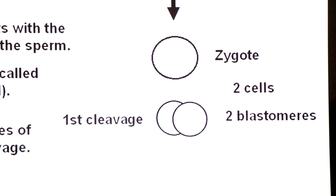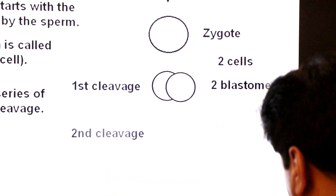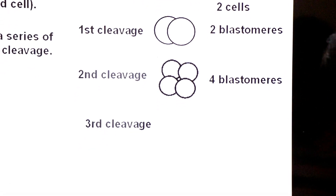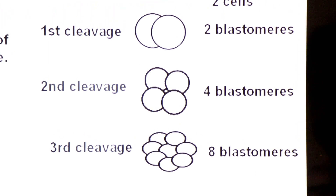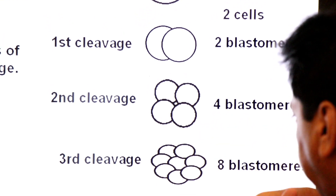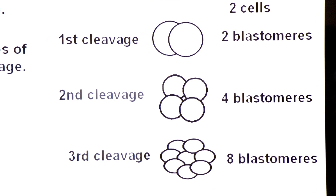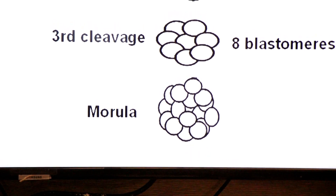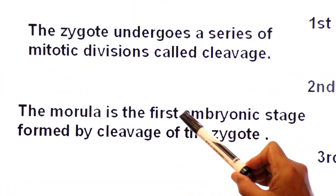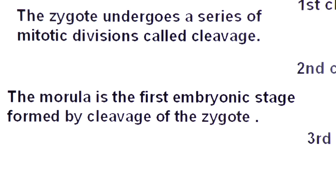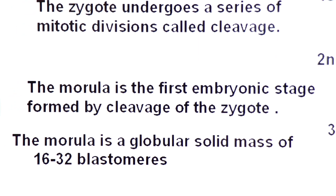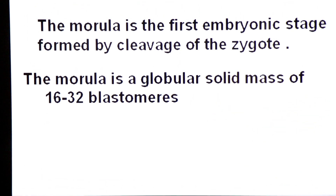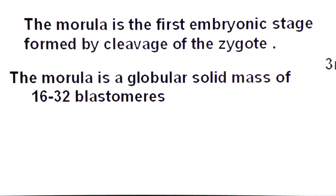This zygote undergoes a series of mitotic cell divisions called cleavage. The first cleavage divides the zygote into two cells. The cells of cleavage are called blastomeres. The first cleavage produces two blastomeres, the second cleavage produces four blastomeres, and the third cleavage produces eight blastomeres. So with each cleavage, the number of blastomeres increases. The first embryonic stage formed is a rounded globular embryo called morula. Morula is a rounded ball-like embryo containing 16 to 32 blastomeres.